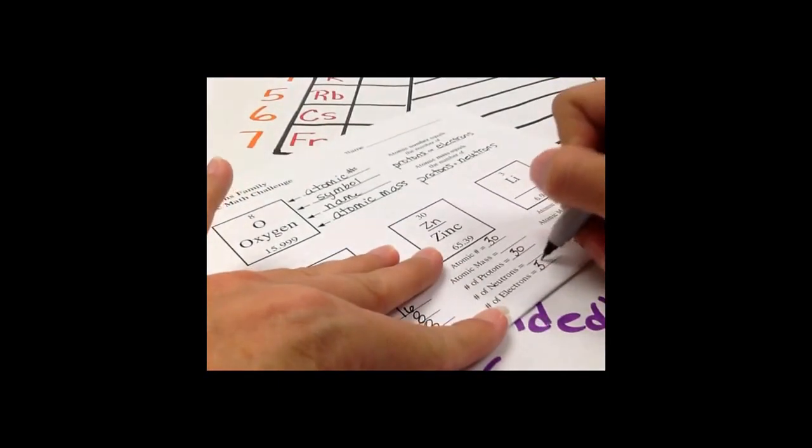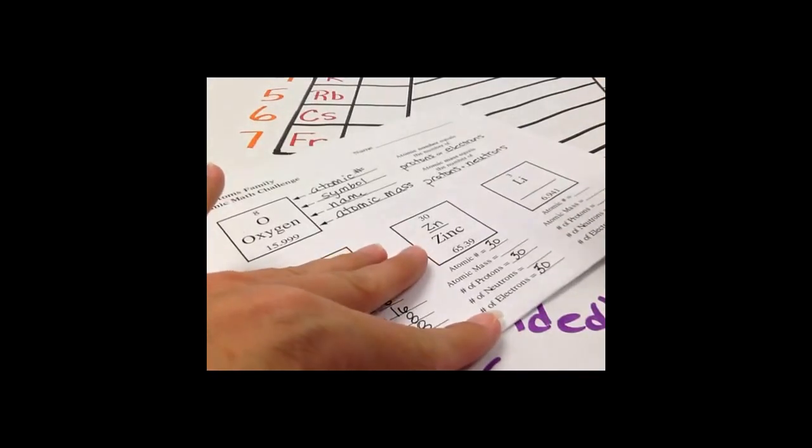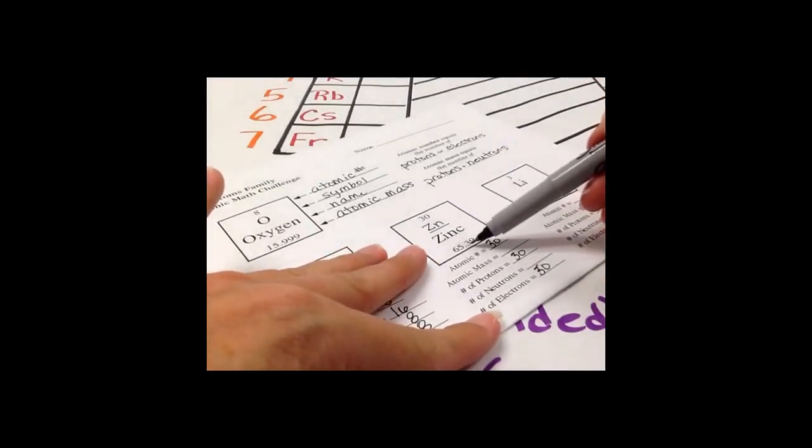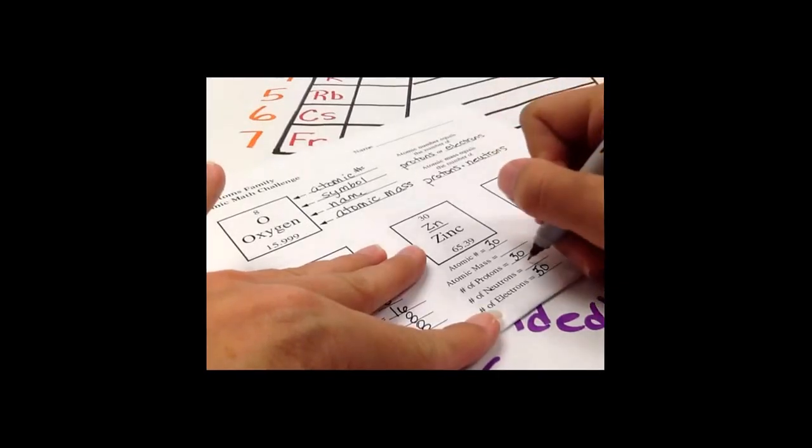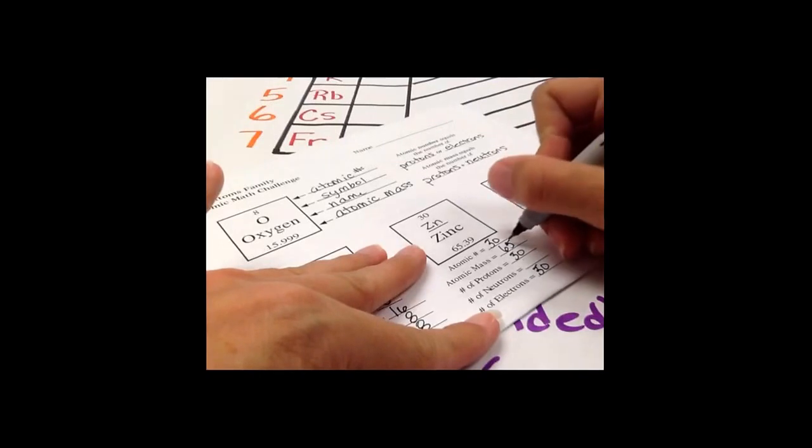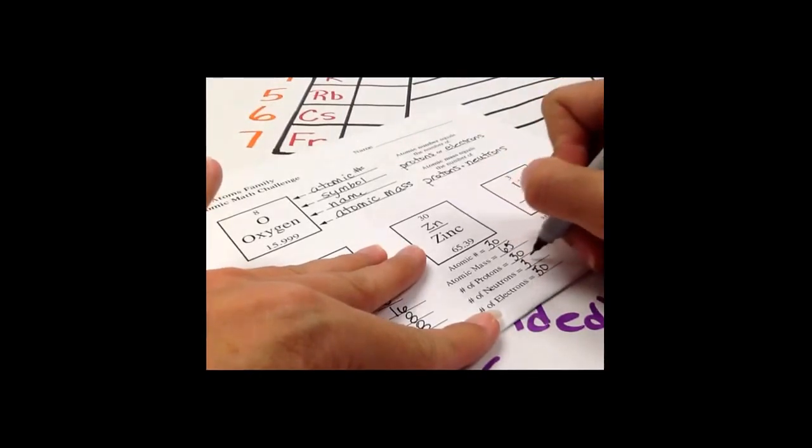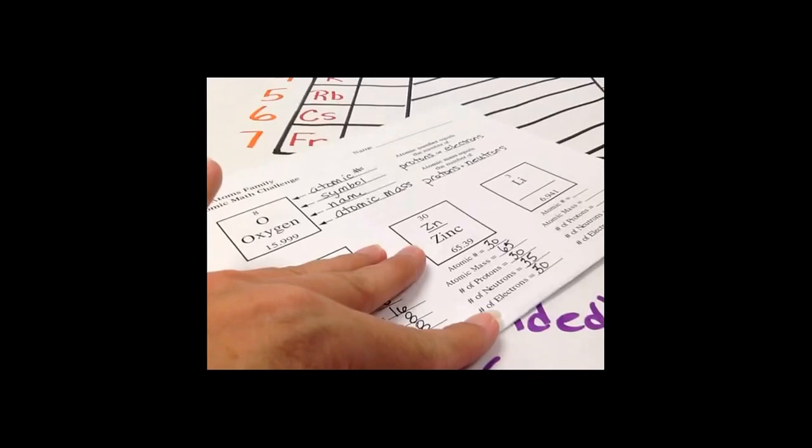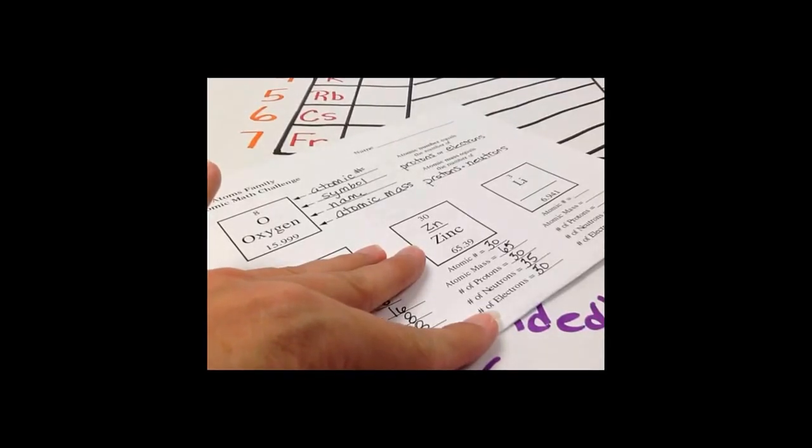My atomic mass is 65.39, so this will stay 65. 65 minus 30 is 35, and that's what I get for my neutrons.